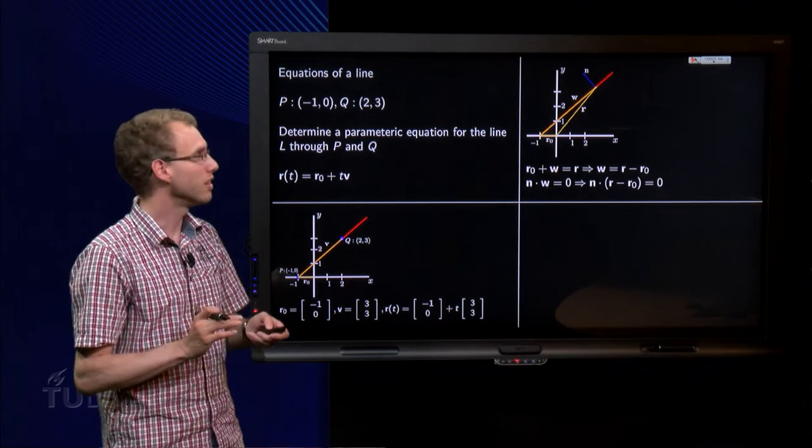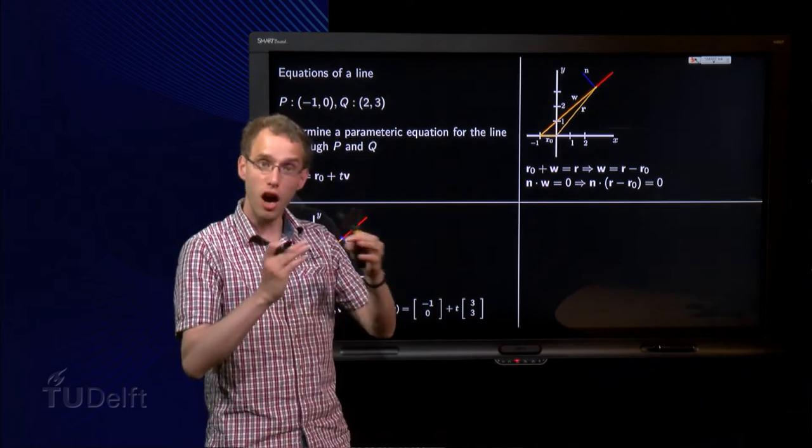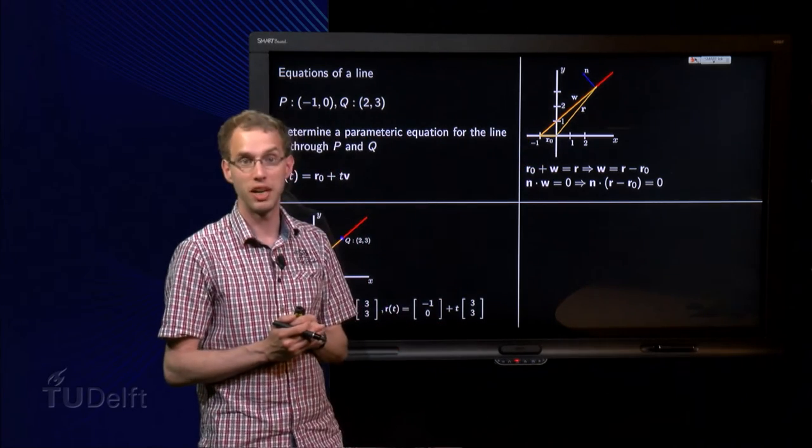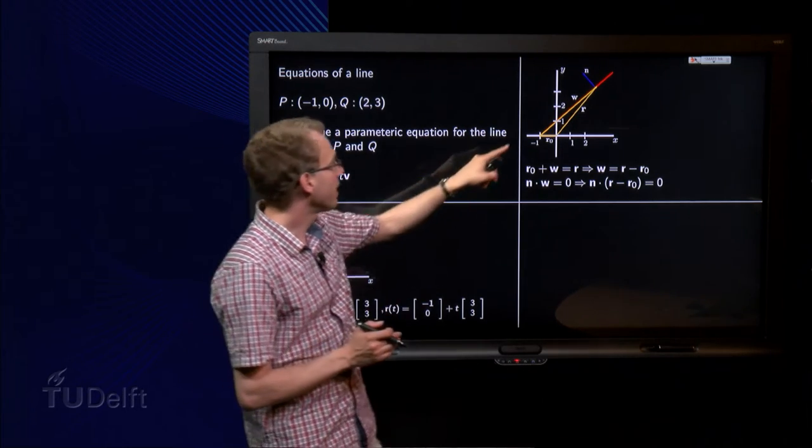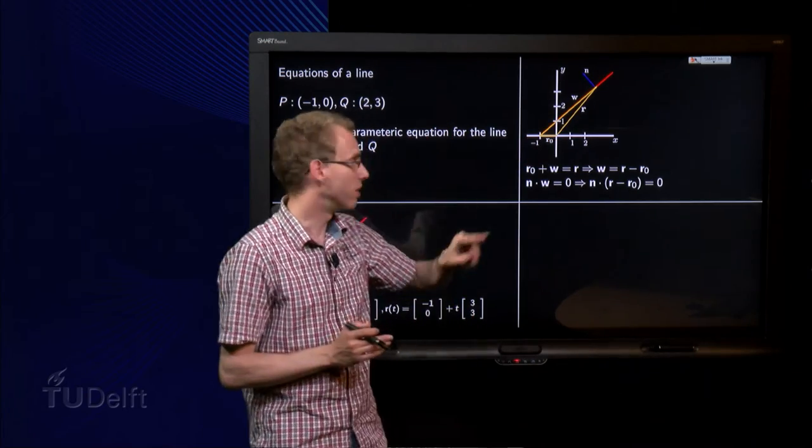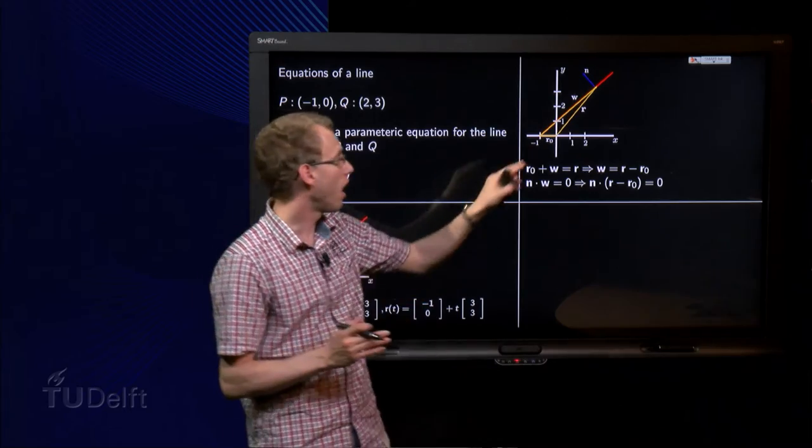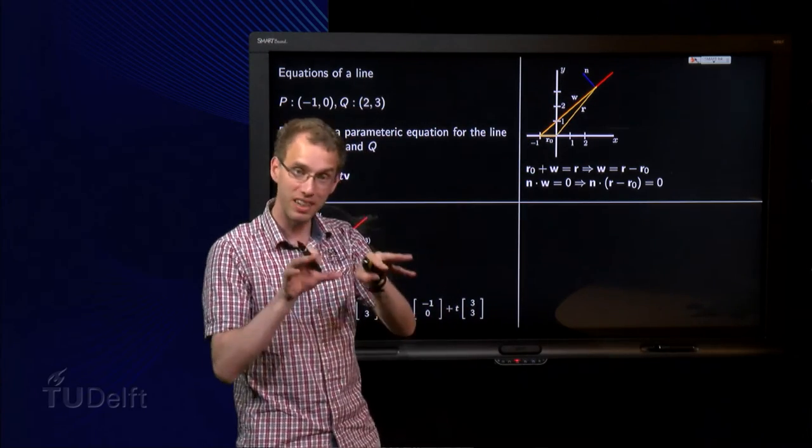Let's see. So here our r is an arbitrary point on the line. r0 is the same as in the previous one, just from the origin to any point. And then the vector w connects r0 and r. So r, general point on the line, r0, specific given point, and w, combination of the two.